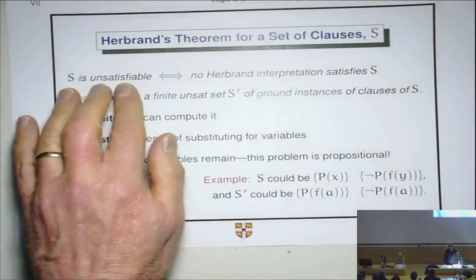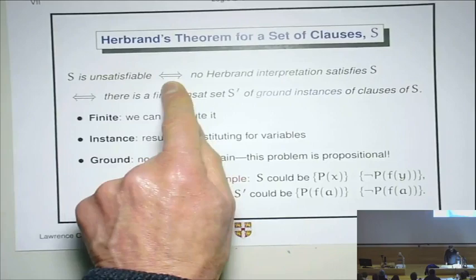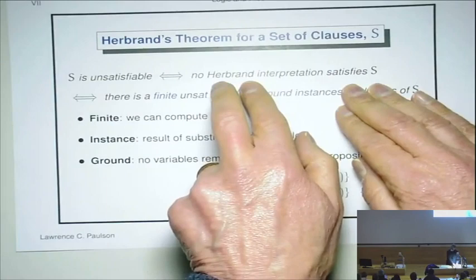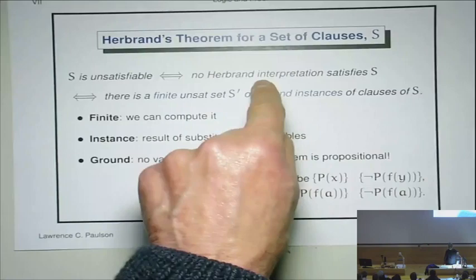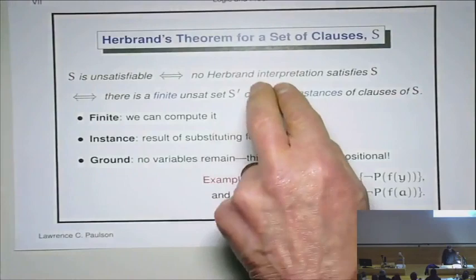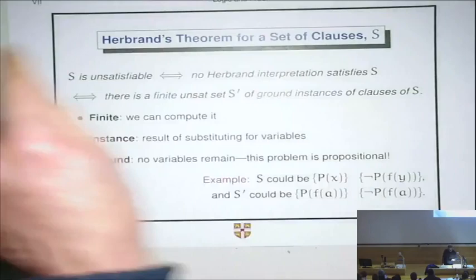Okay, a set of clauses is unsatisfiable, meaning it has no models, if and only if it has no models among the Herbrand things. Now, one direction is trivial. So, if it has no models, clearly it has no Herbrand models either because they're a subset. But in the other direction, if it has no Herbrand models, then it has no models of any kind because a Herbrand model can imitate any other model.